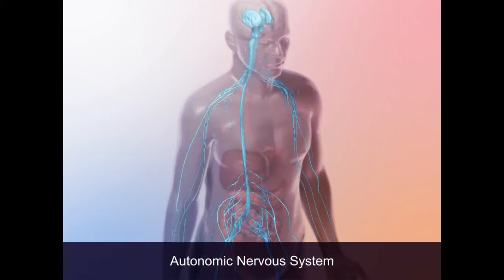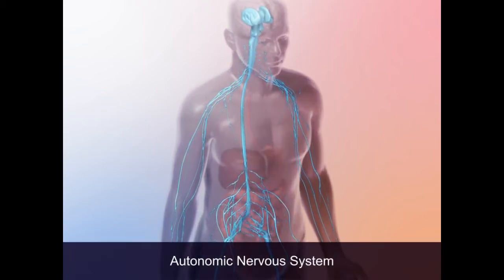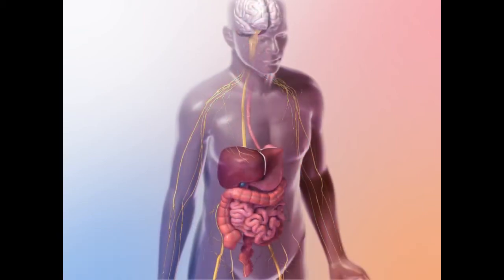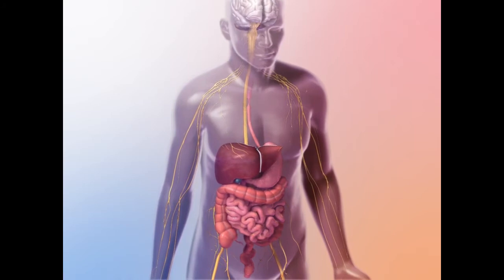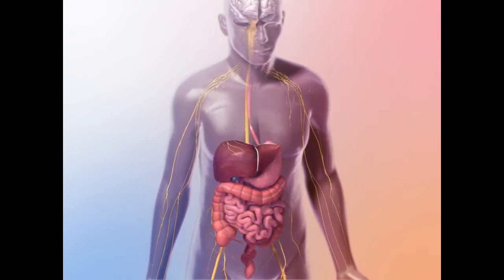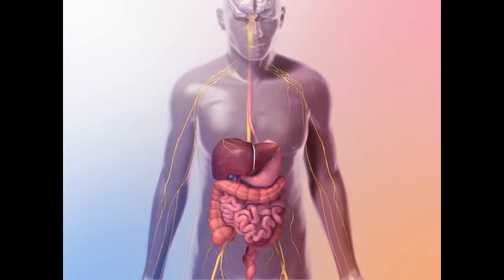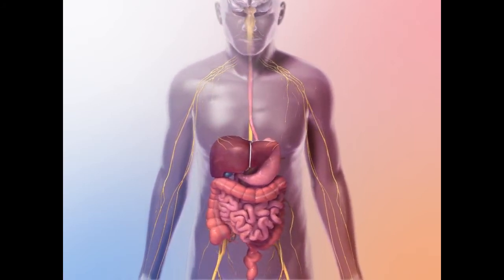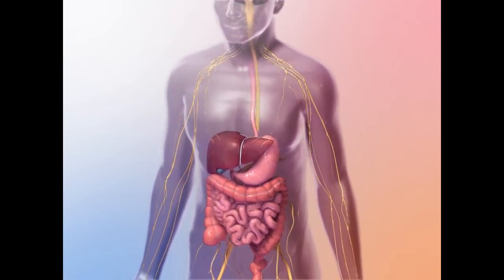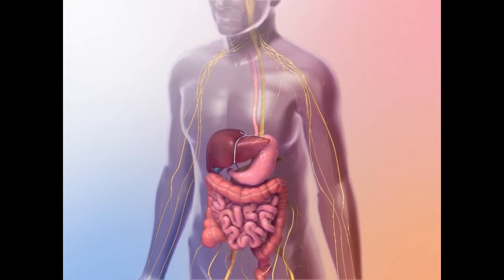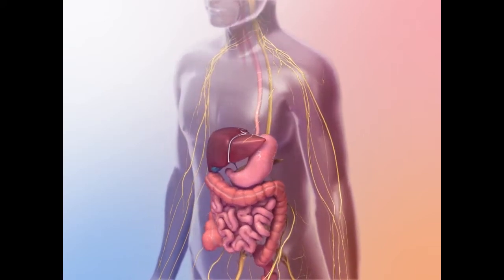The autonomic nervous system controls contractions of the alimentary canal that move swallowed food down the esophagus, churn the stomach, and move chyme through the small intestine and large intestine.